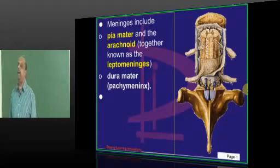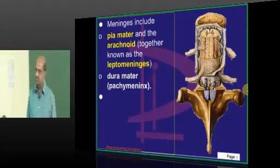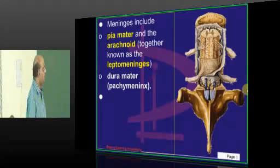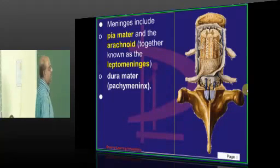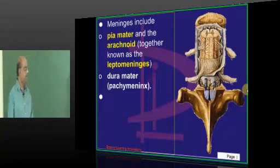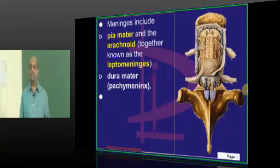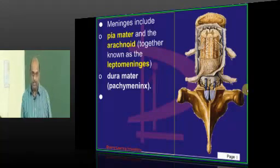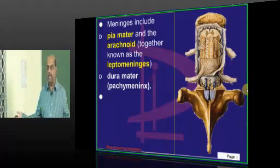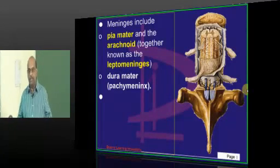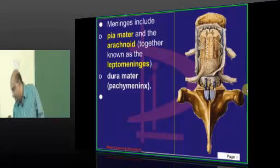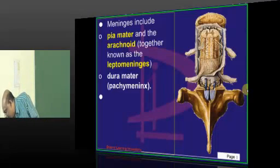Meninges — you all know: pia, the innermost; arachnoid in the middle; then the dura. Pia and arachnoid are basically called leptomeninges — that is what needs to be remembered.